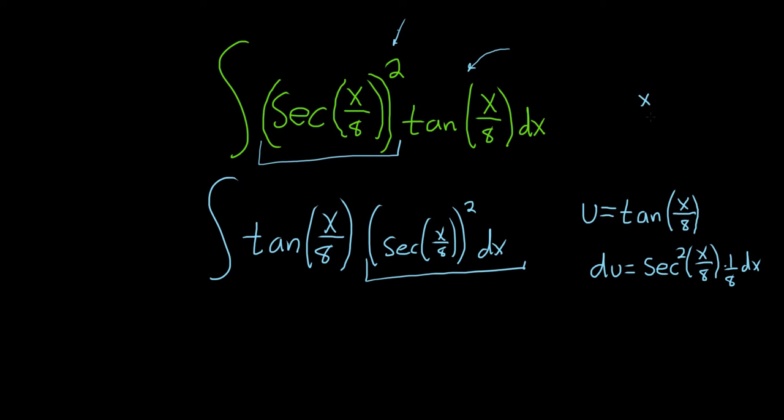Remember, you could think of x over 8 as 1 eighth times x. So when you take the derivative, you're basically taking the derivative of x, which is 1, and the 1 eighth hangs out.